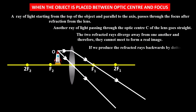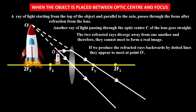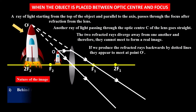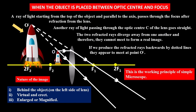If we produce the refracted rays backwards by dotted lines, they appear to meet at point O', where we can see the virtual image of the object on the same side of the object. The image is formed behind the object, on the left side of the lens. It is virtual and erect, and it is enlarged — a magnified image. This is the working principle of a simple microscope.